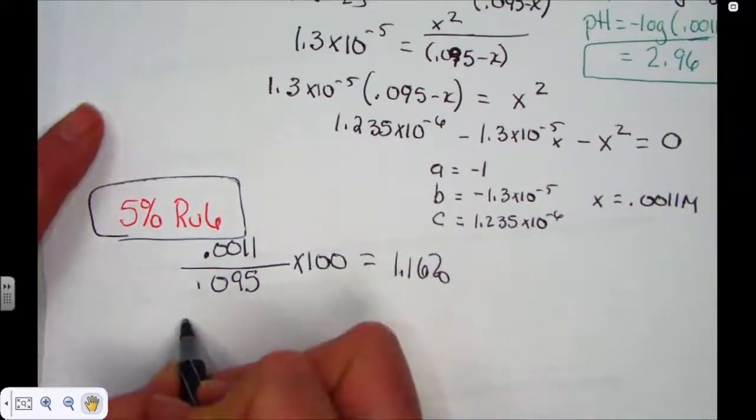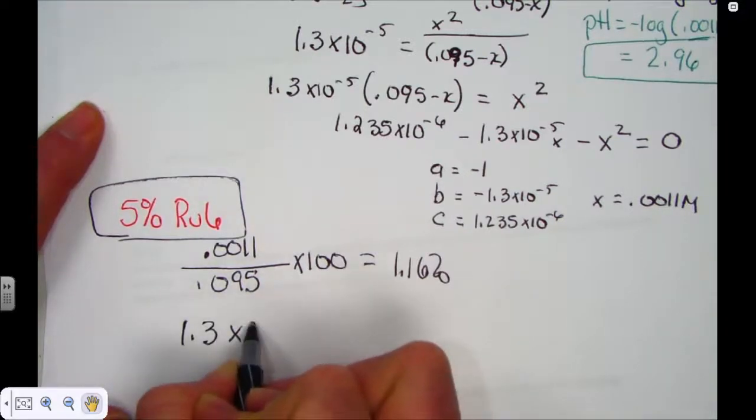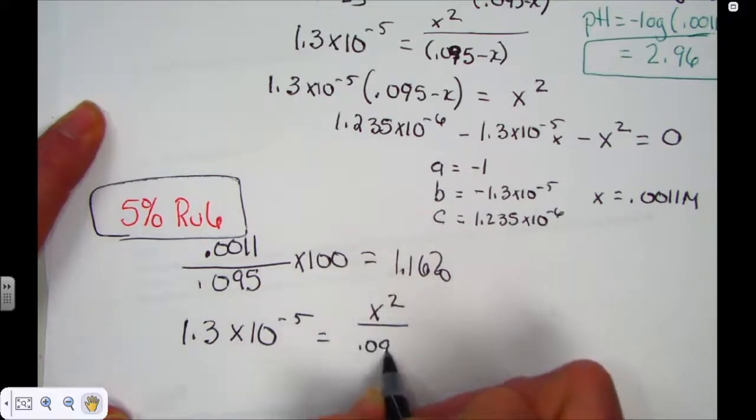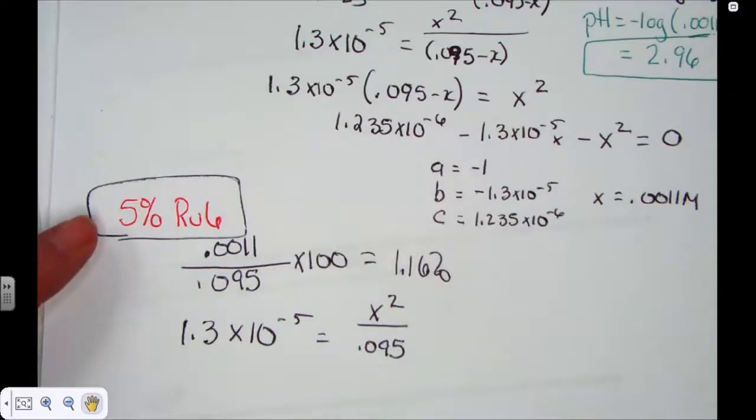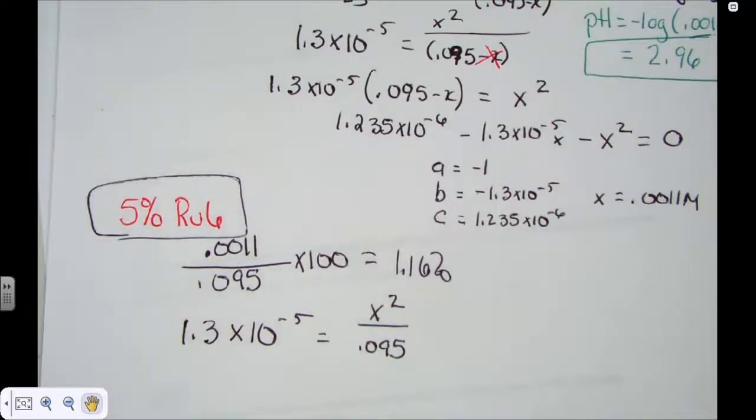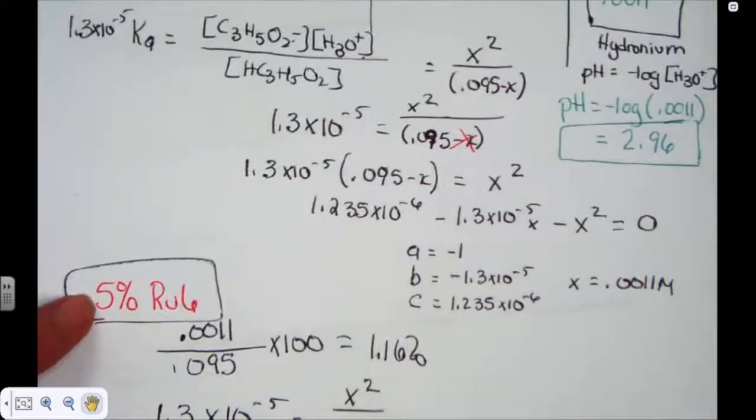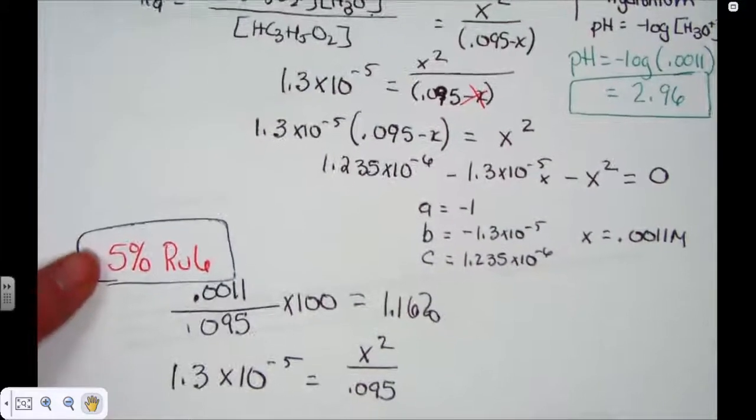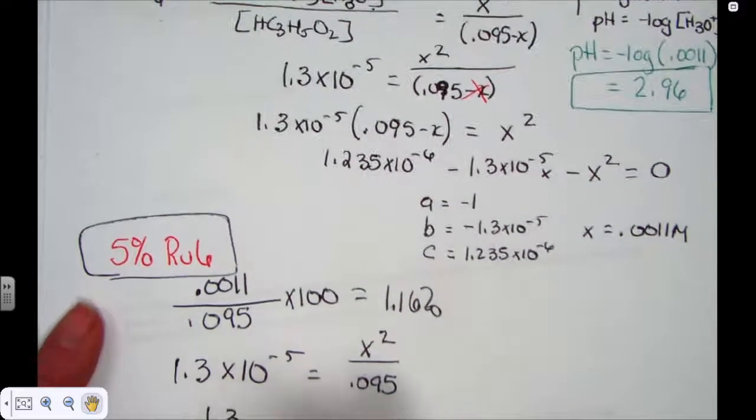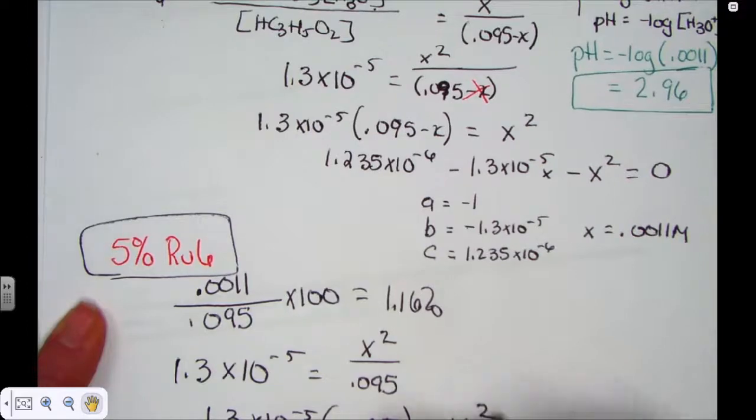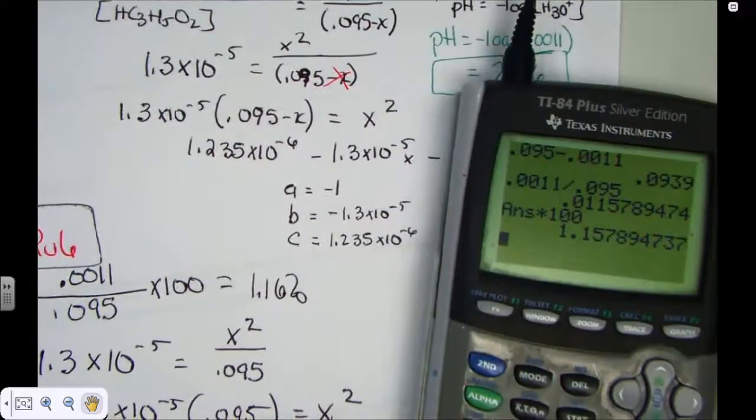In other words, we could have set up the original Ka, 1.3 times 10 to the negative fifth, equal to x squared, and then simply set over 0.095. Instead of having to put the minus x in there, we could leave it as the original concentration. The rule says, 5% rule, if indeed the acid is weak enough and hardly dissociates, what we're looking at is being able to toss out that minus x. So that really, what I could have done, distribute that number, set equal to x squared, square root my value, and would have been home free.